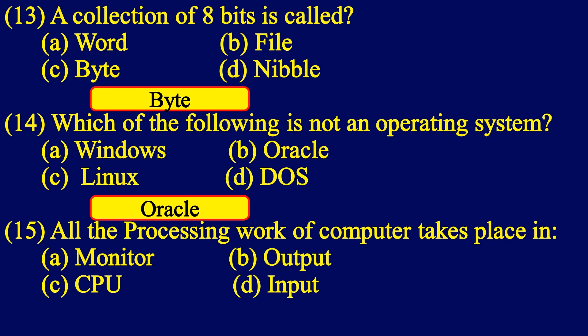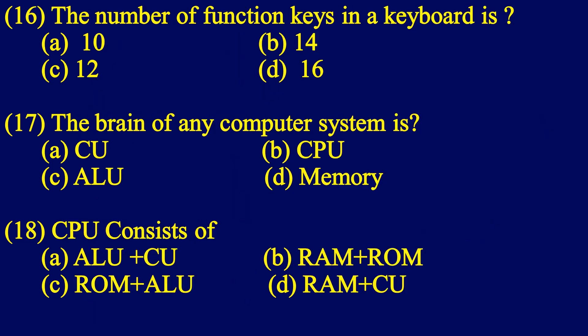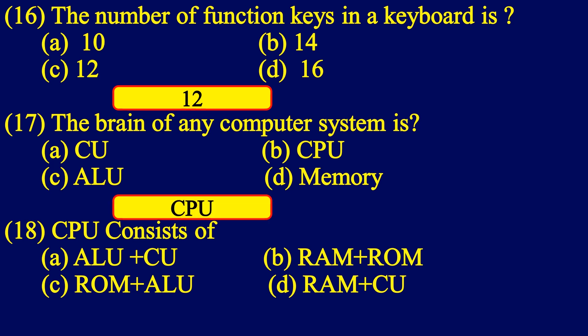All the processing work of computer takes place in CPU. The number of function keys in a keyboard is 12. The brain of any computer system is CPU.